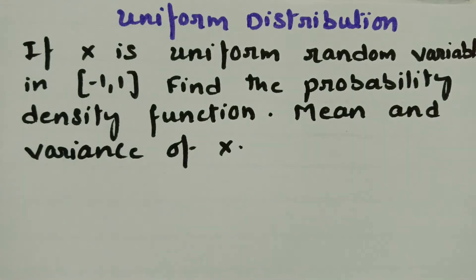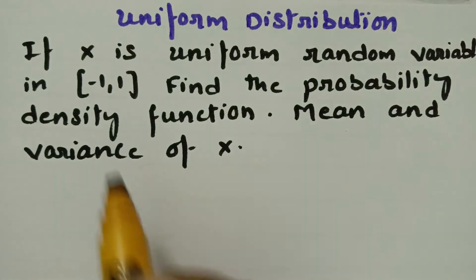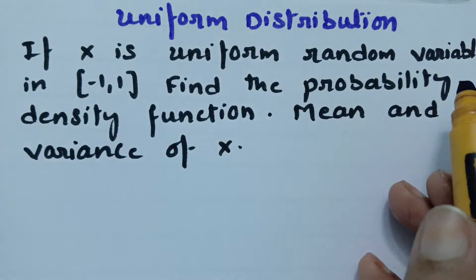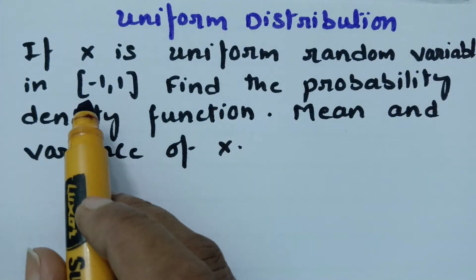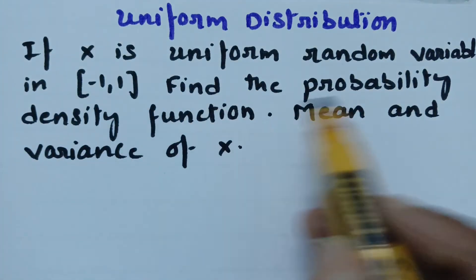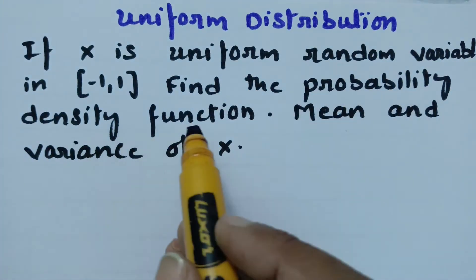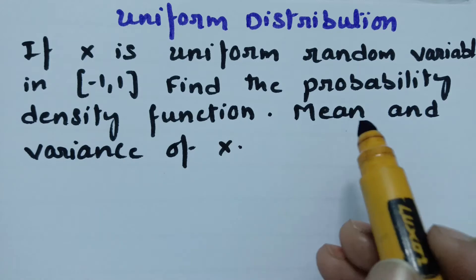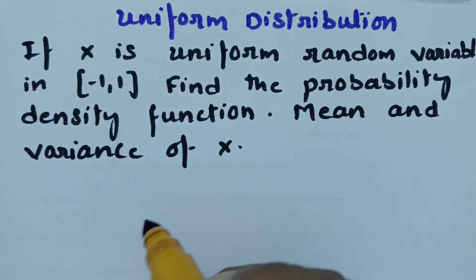Today's video is on uniform distribution. The problem is: if x is a uniform random variable in minus 1 and 1, find the probability density function, mean, and the variance of x.